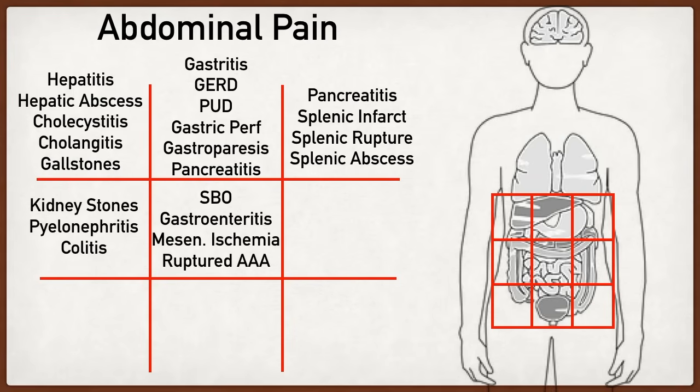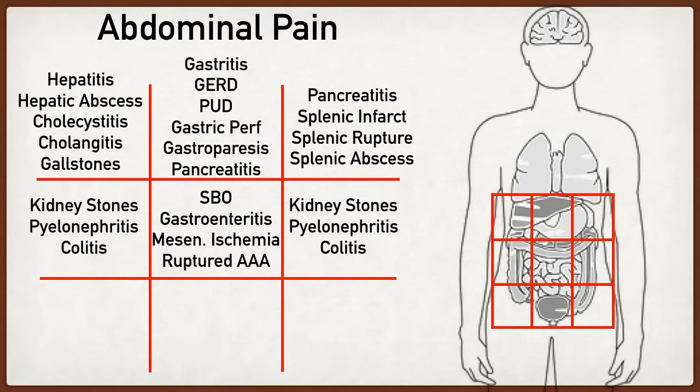The left flank or lumbar region is very similar to the right flank because it contains the kidneys and colon again. So we're going to see similar pathology including kidney stones, pyelonephritis, and colitis. The key difference is that colitis in the left lumbar region usually involves the descending colon rather than the ascending colon seen in the right lumbar region.